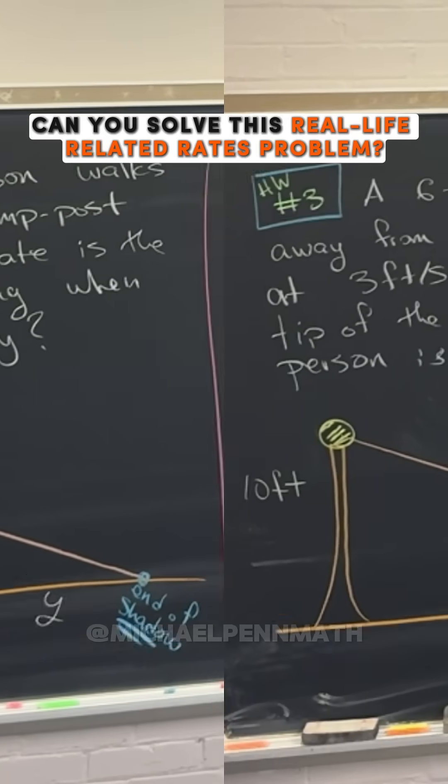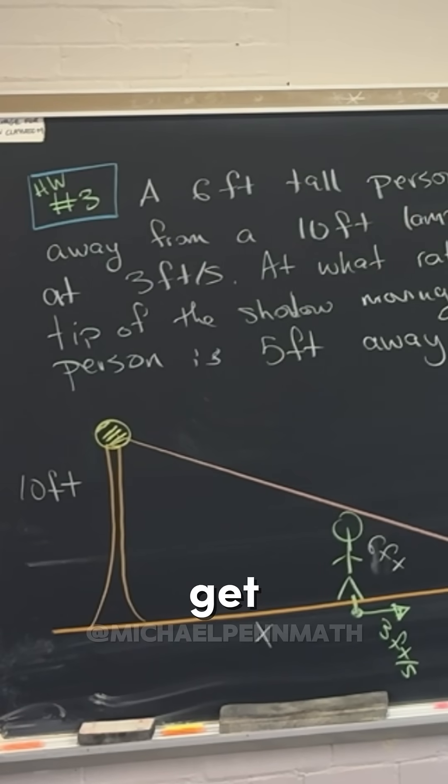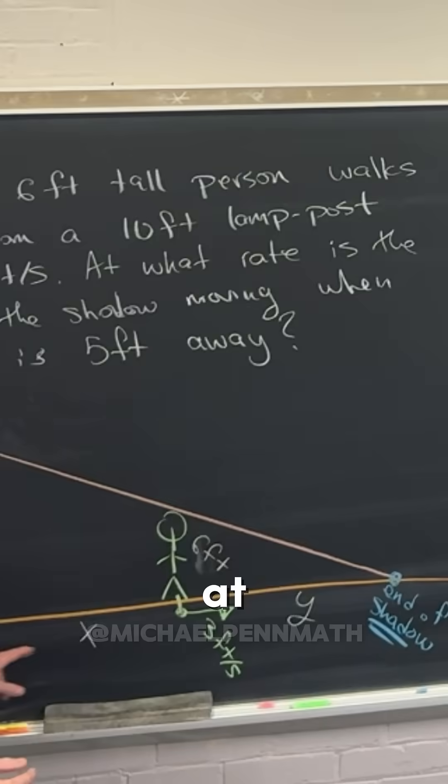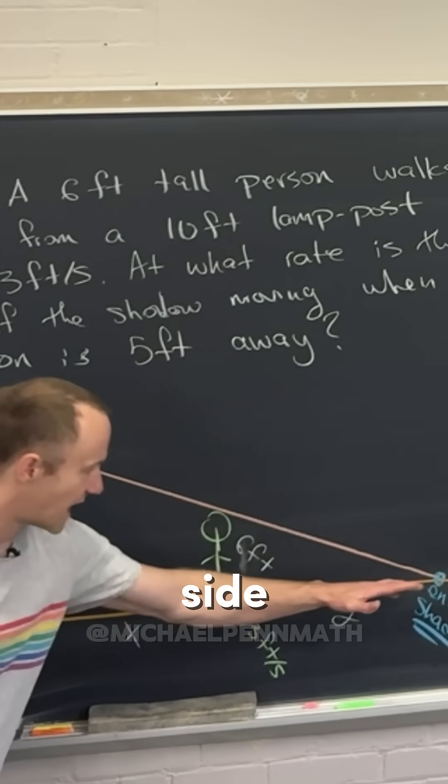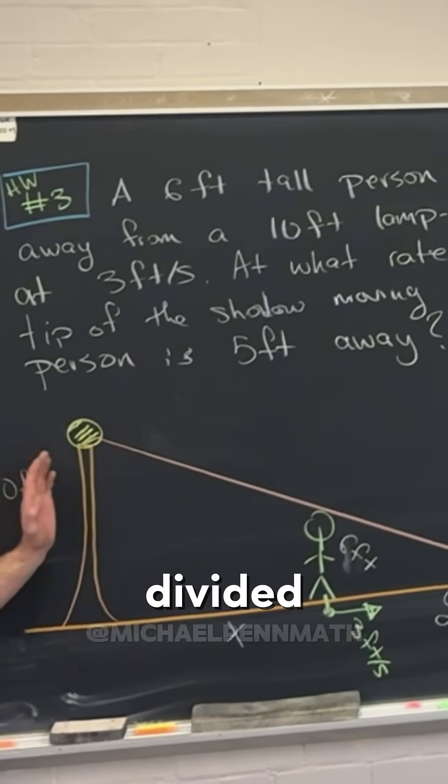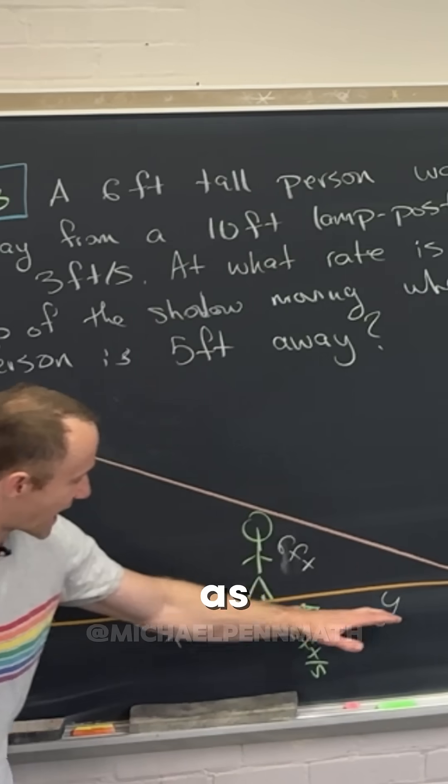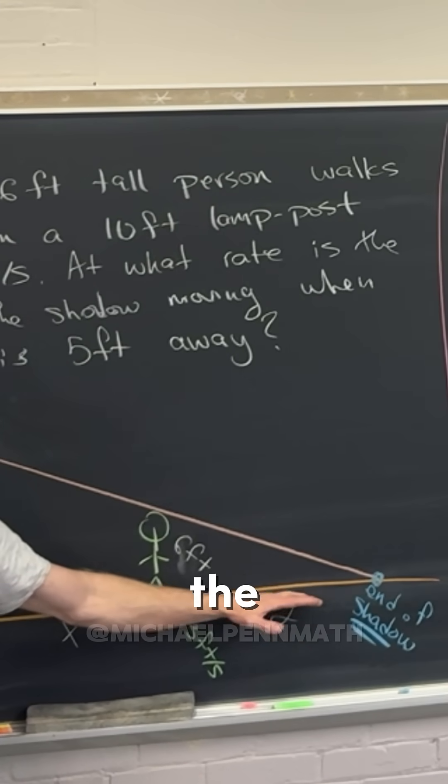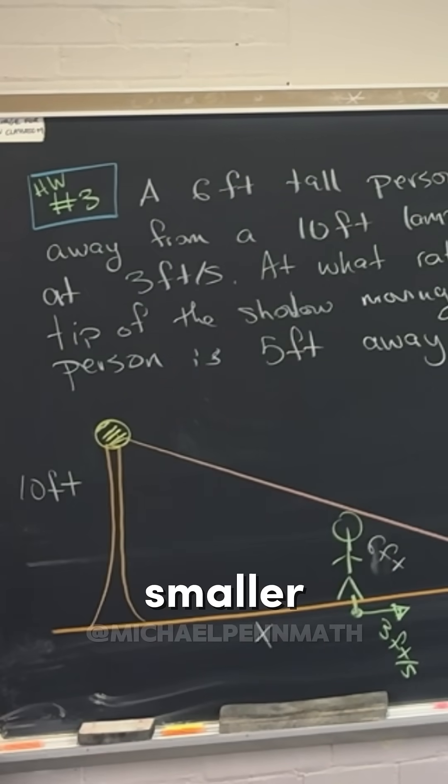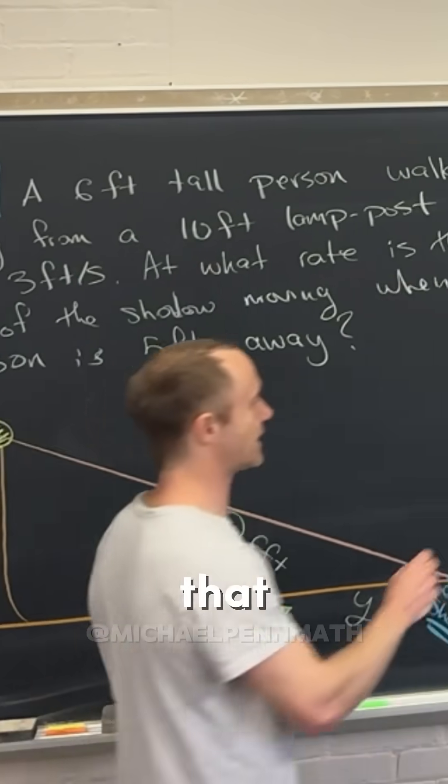What do we know about similar triangles? Well, if you take proportions of sides you should get the same thing. So if we look at this long side, this ground side of the longer triangle divided by the altitude of the longer triangle, you get the same thing as the ground side of the smaller triangle divided by the altitude of the smaller triangle.